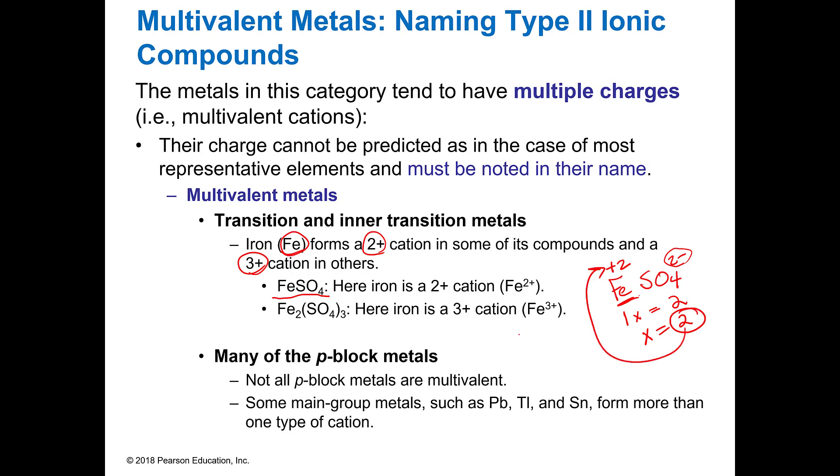In the second one, where I have Fe2(SO4)3, since I would have swapped and dropped these to figure this out. Still, I know that there's always a minus two on my sulfate and I have three of those. So two times three is six. This time I have two irons. So two irons must equal six. So the charge must be three. So that must be a plus three.